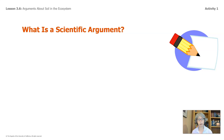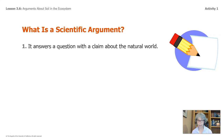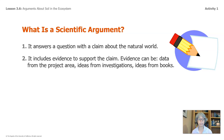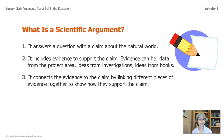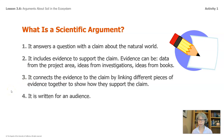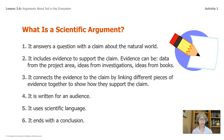What is a scientific argument? It answers a question with a claim about the natural world. It includes evidence to support the claim. Evidence can be data from the project area, ideas from investigations, and ideas from books. It connects that evidence to the claim by linking different pieces of evidence together to show how they support the claim. It is written for an audience, uses scientific language, and ends with a conclusion.